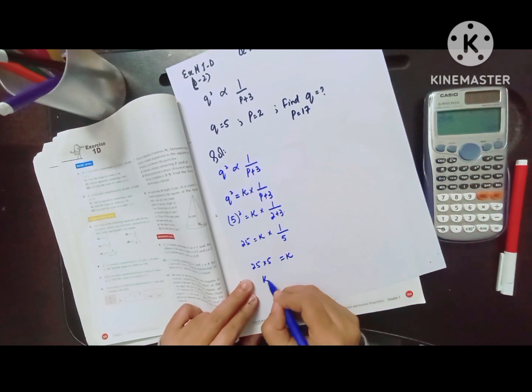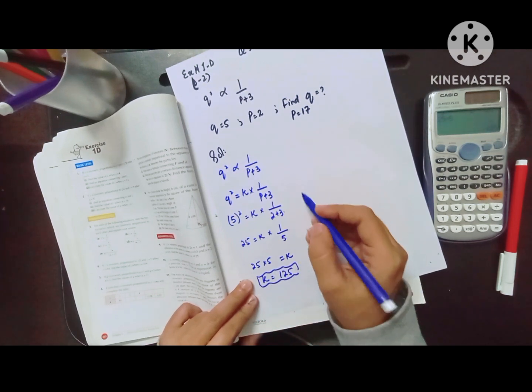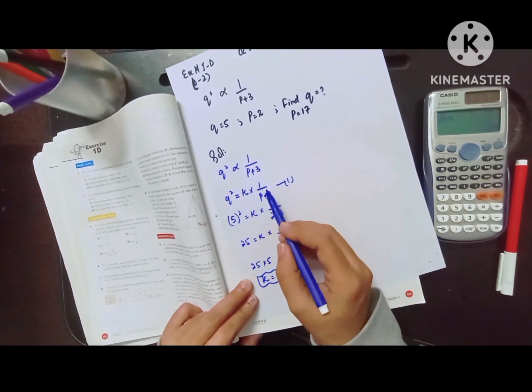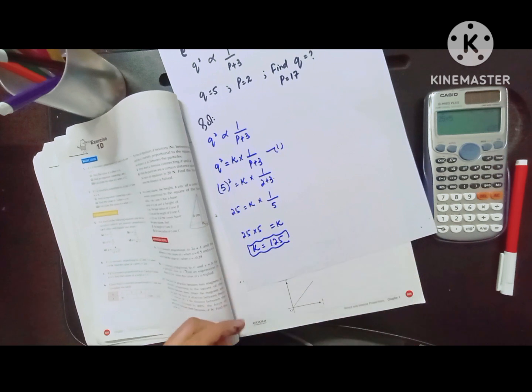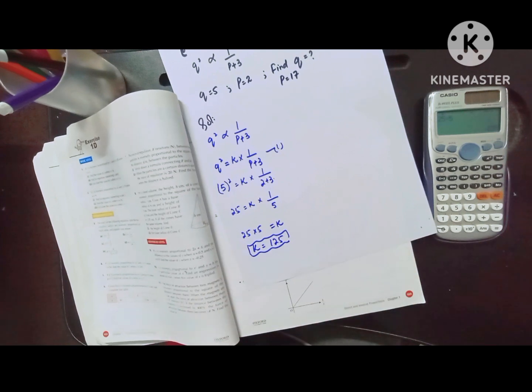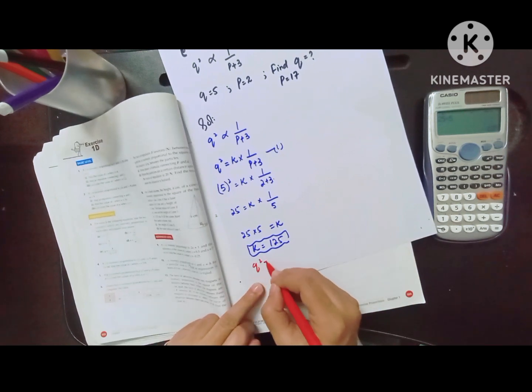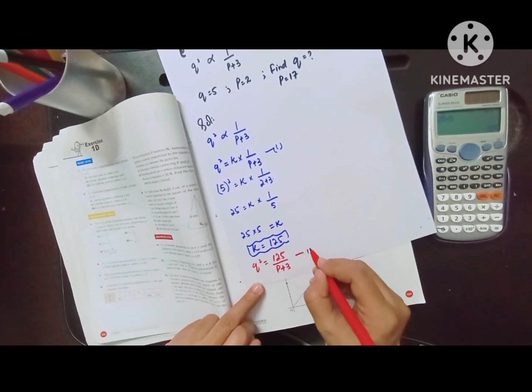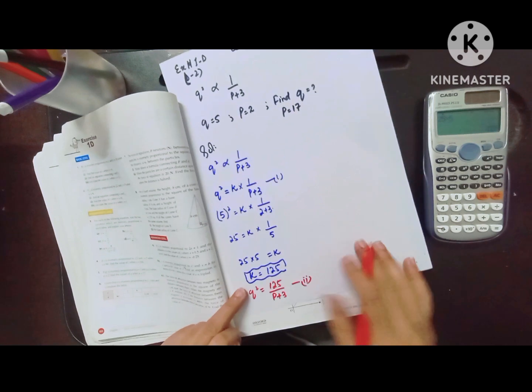Then the value of k is 125. The initial equation was q² equals k times 1 over p plus 3. So we can say that q² equals 125 divided by p plus 3. That is the equation we can use.